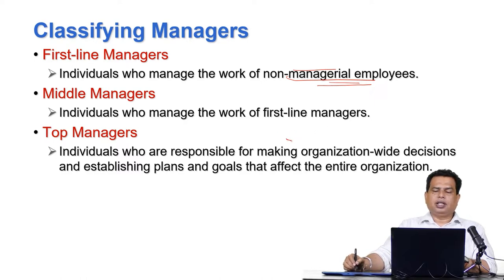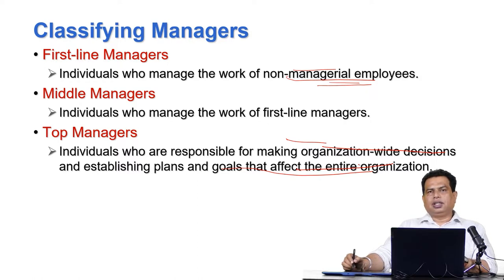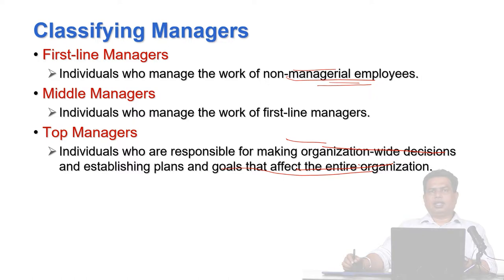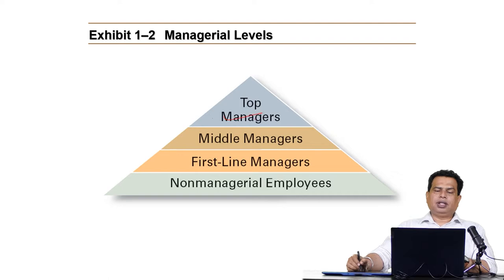Top managers are the individuals who are responsible for making organization-wide decisions and establishing plans and goals that affect the entire organization. These are the persons whose decisions are going to affect the whole organization — not just one department but the entire organization. This is the pyramid that shows the different managerial levels: top managers at the top, then middle managers, then first line managers, and then non-managerial employees.